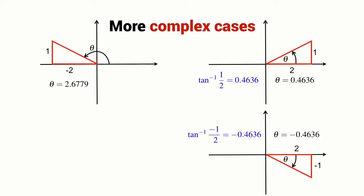Now let's consider the case of an angle that's bigger than pi on 2. In this case, the height is 1 and the width is equal to minus 2. In this case, theta is equal to 2.6779 radians. If I compute the arctangent of 1 over minus 2, then I get a result which is minus 0.4636. We see that there is a discrepancy between the actual angle of this line and the angle which is given to us by the arctangent function.